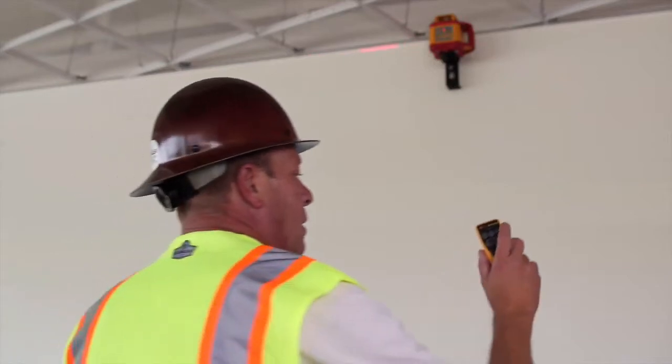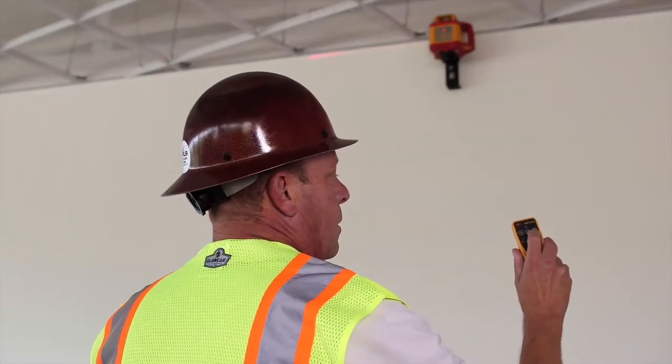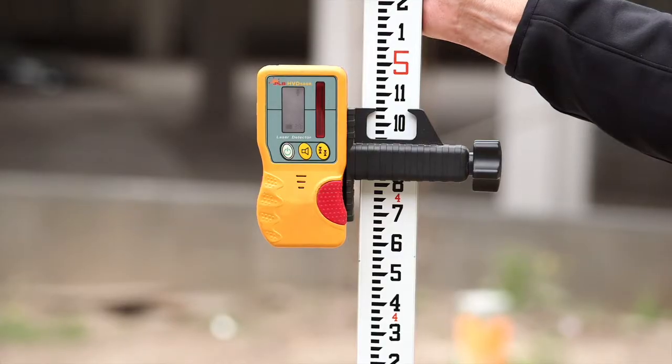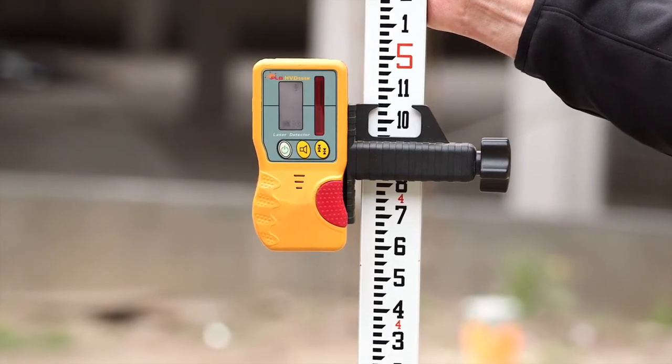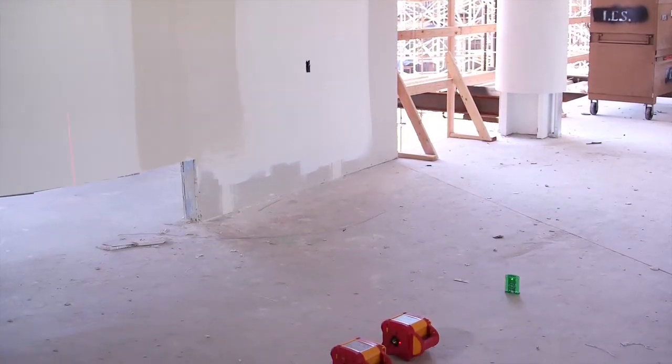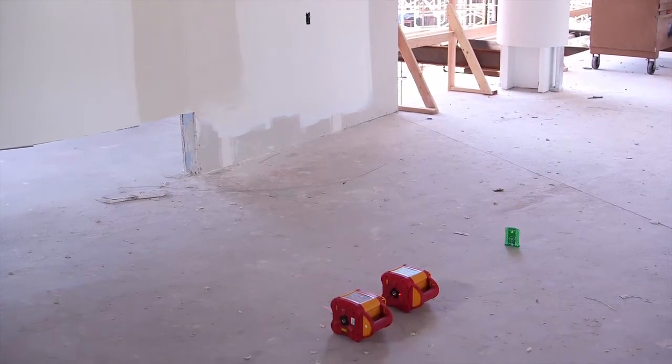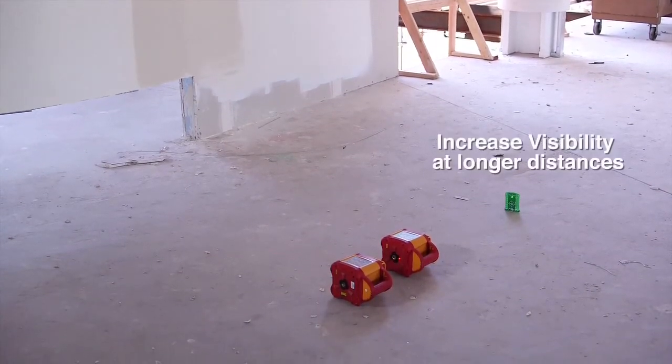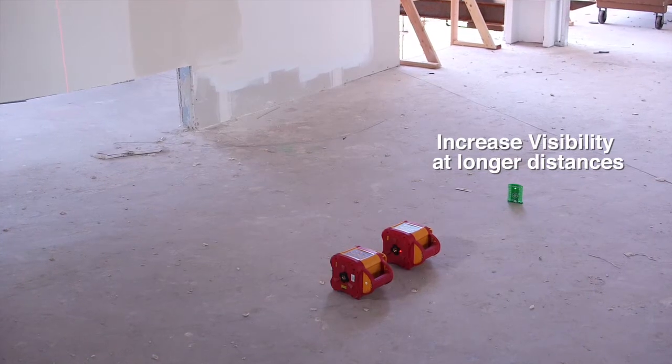Use the HVR 505 remote control to manage the laser from a distance and the HVD laser detector to capture the laser beam in bright sunlight. The HVR 505 Green Beam is ideal for demanding interior layout projects that require increased visibility at longer distances.